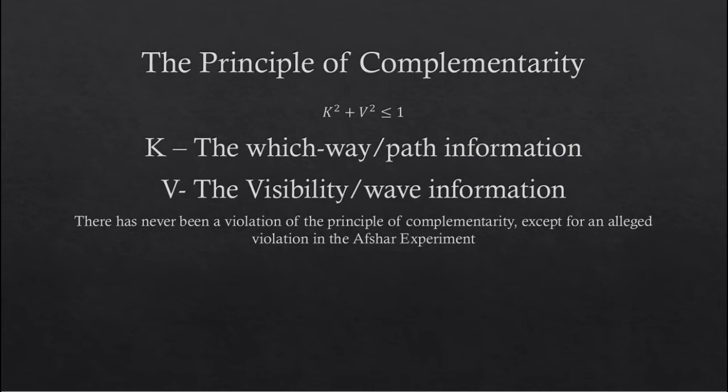Furthermore, the more that is known about one aspect of matter, the less that can be observed regarding the other. For example, high visibility always leads to low which-way information.